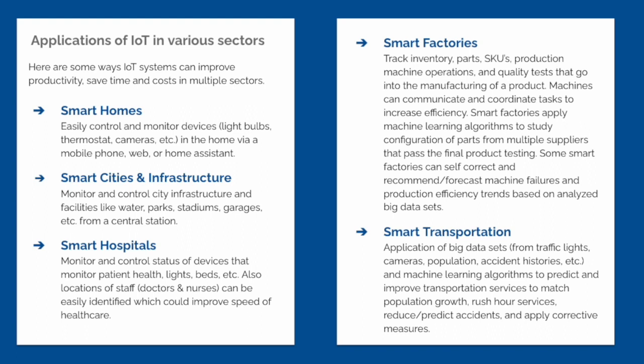You could also have IoT in smart transportation, where data from traffic lights, population patterns, and accident histories can be used to predict and improve transportation services that people in the community use.